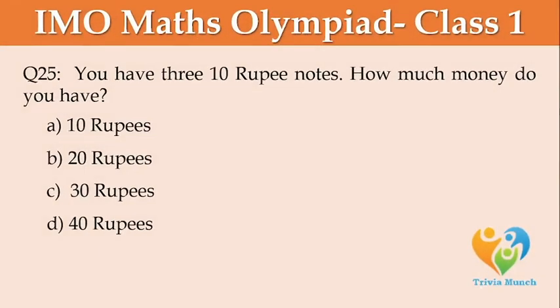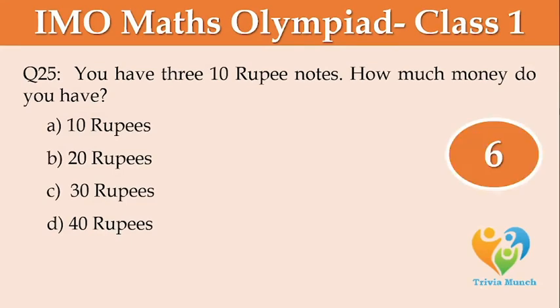You have 3 ten-rupee notes. How much money do you have? Option A: 10 rupees, Option B: 20 rupees, Option C: 30 rupees, Option D: 40 rupees.